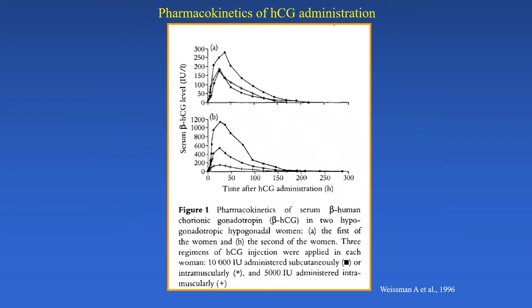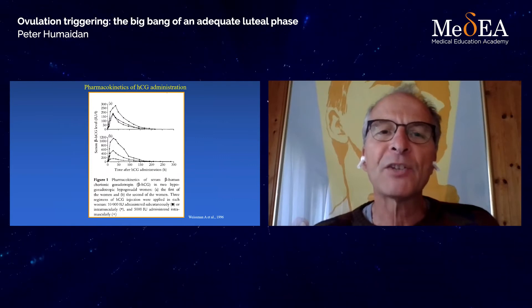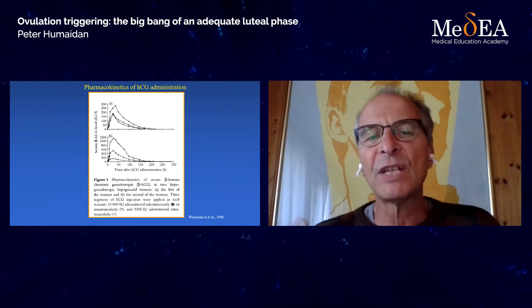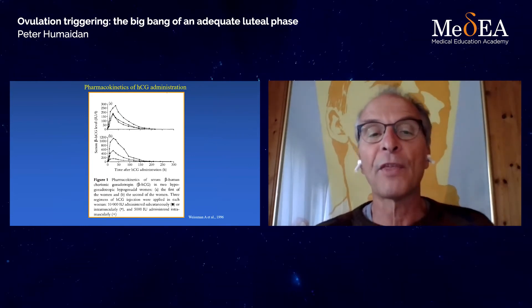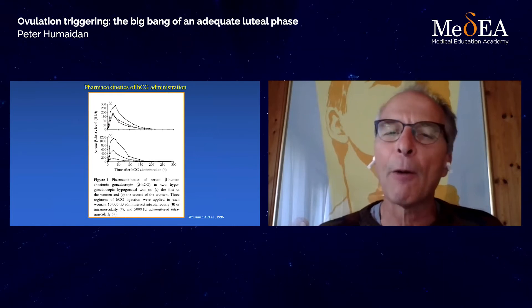This is a very early study from Israel by Weissmann looking at two hypogonadotrophic patients — patient A and patient B — administered three different regimens of HCG: 10,000 units subcutaneously, 10,000 units intramuscularly, and 5,000 IU intramuscularly. We can see why we use HCG subcutaneously — that's where we get the highest and longest duration of HCG. But note the huge difference between these two patients given the same bolus: patient A reached 300 IU of HCG in serum, whereas patient B reached 1,200 IU. So there are very distinct differences in the way our patients respond to treatment.